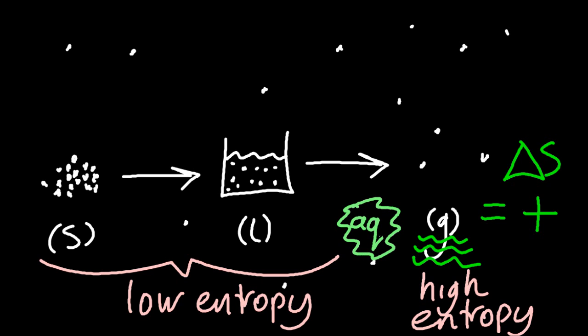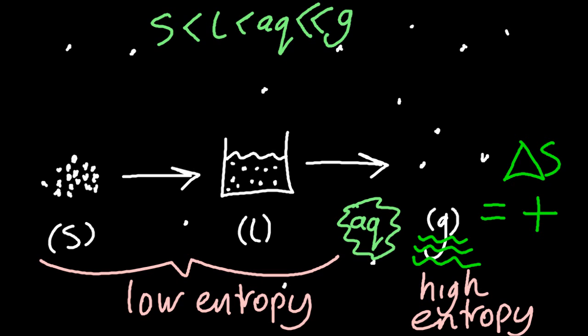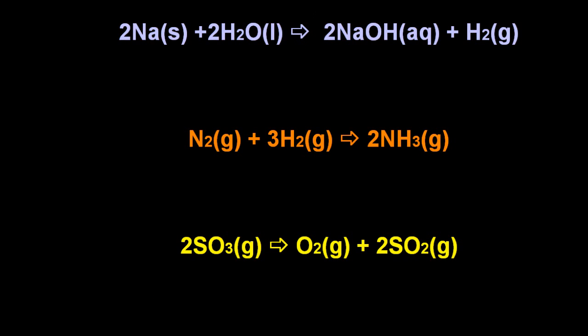And aqueous would go about in the middle of that pattern. So the order is solid, liquid, aqueous, and then gas — that has the most entropy. The trick is to look for the gas. So on the first equation, I have a gas in the products — hydrogen gas there. I've got a solid, a liquid, and I've made an aqueous. Gas is the one you've got to look for, so delta S is plus. The gas has very high entropy.